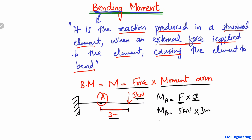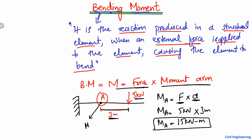So the moment at point A will be equal to 5 into 3, which gives us 15 kilonewton meters. So the bending moment due to the 5 kilonewton load at point A is 15 kilonewton meters.